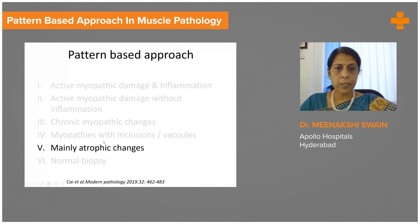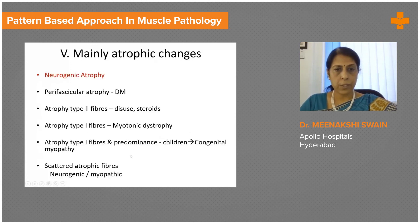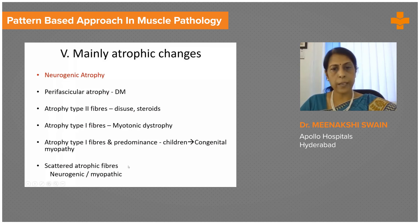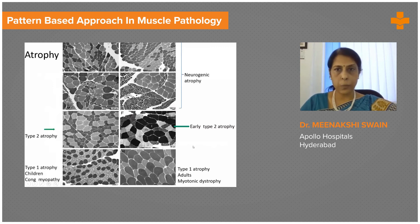Category five is one where you see mainly atrophic changes. If one has excluded neurogenic atrophy, then atrophy can be seen in a perifascicular manner, as I showed you in dermatomyositis. You could have selective atrophy of various fiber types, which could indicate certain diagnoses. In any myopathy or neurogenic process, you could also have scattered atrophic fibers, which may just be a nonspecific phenomenon.